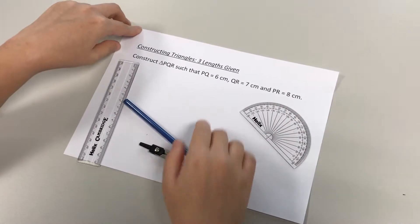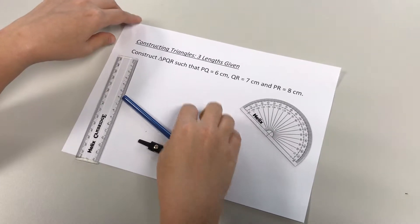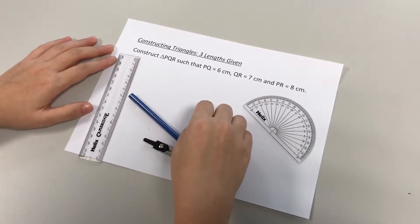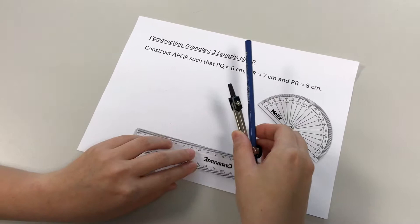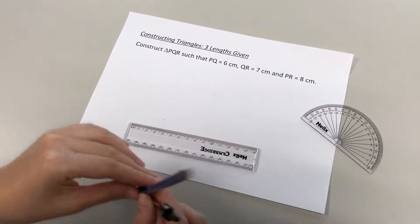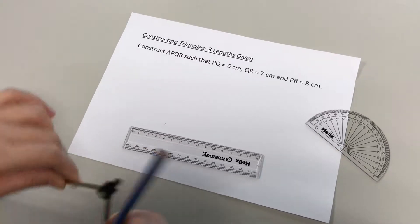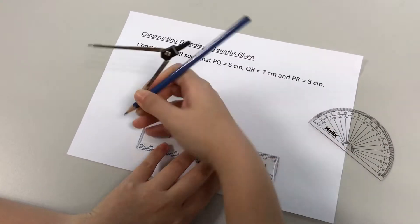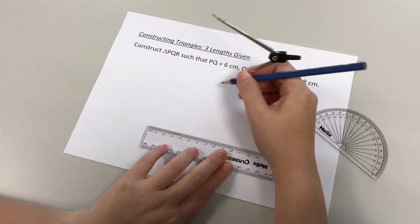All right, so the first step in drawing any shape, triangles or quadrilaterals, is to make sure we use our ruler to start off with drawing a straight line. So we can look at the first info given, PQ is 6cm, take a ruler and draw a line 6cm long.